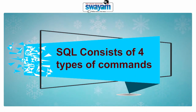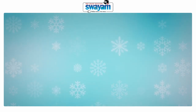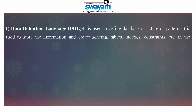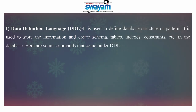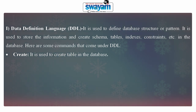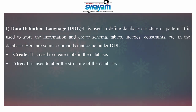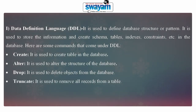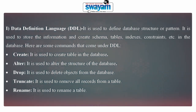SQL mainly consists of four types of commands. Number one: Data Definition Language (DDL) commands. It is used to define database structure or schema. It is used to store information and create schemas, tables, indexes, constraints, etc. in the database. Commands under DDL include: Create — used to create a table in the database; Alter — used to alter the structure of the database; Drop — used to delete objects from the database; Truncate — used to remove all records from a table; Rename — used to rename a table.